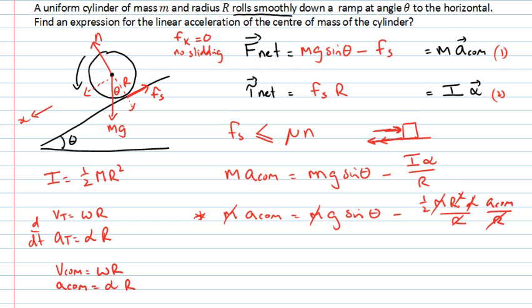And that r on the bottom cancels with that final r on the top. And we can collect like terms. So if I take ½ a_cm across to the right-hand side, I really have 3/2. The acceleration of the center of mass is equal to g times sin θ. And finally, the acceleration of the center of mass is equal to 2/3 times g times sin θ.